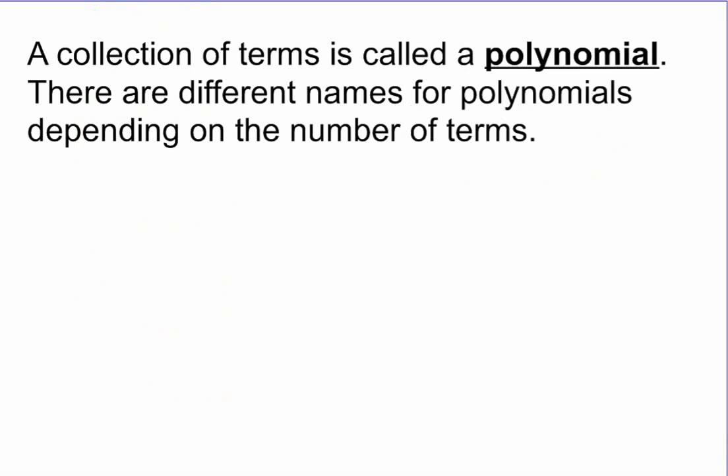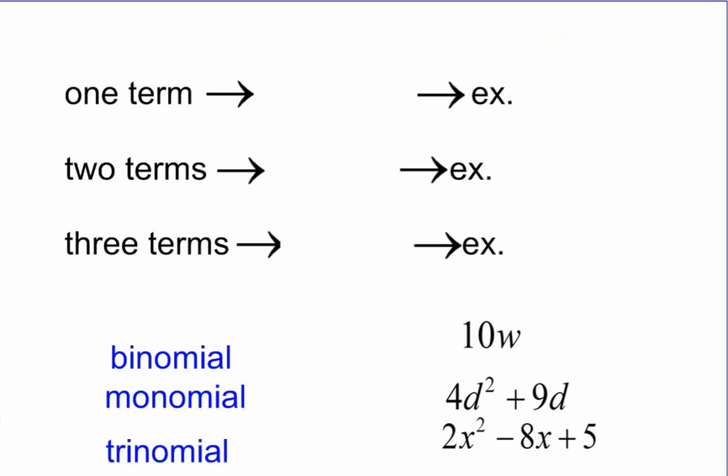So a collection of terms is called a polynomial. There are different names for polynomials depending on the number of terms. So polynomial is another important word that we're going to see. Some synonyms are things like algebraic expression. That really says the same thing as polynomial. So, specifically, there are special names given to one-term polynomials, two-term polynomials, and three-term polynomials.